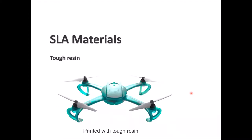An example shown here is a drone printed with tough resin. The designer chose tough resin because the drone can experience a lot of impact and stress — airflow causes the cantilever beams to undergo loading and unloading conditions. Also, when a drone stops operation or lands, it can experience significant drops, so tough resin is a smart choice in this case.